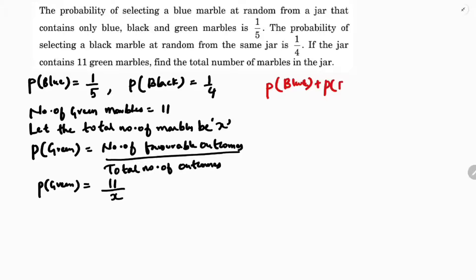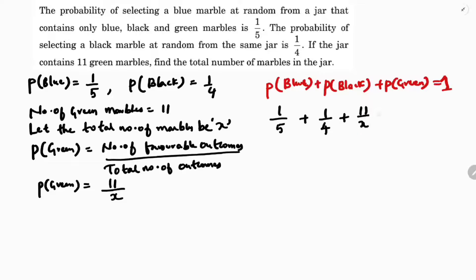Probability of blue plus probability of black plus probability of green equals 1, because the sum of all probabilities is 1. They told us the jar contains only black, blue, and green marbles, so we have no other marbles. Therefore: 1/5 plus 1/4 plus 11/x equals 1.